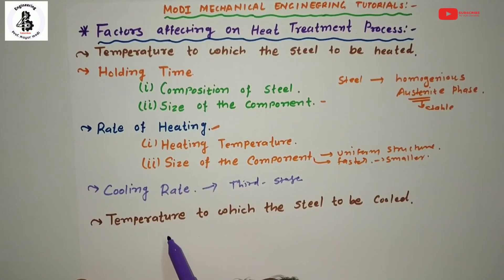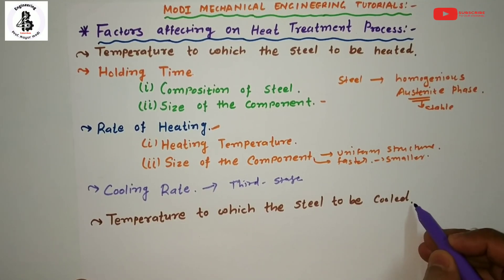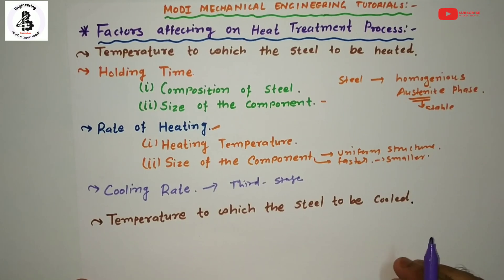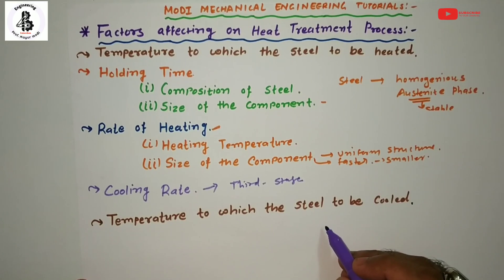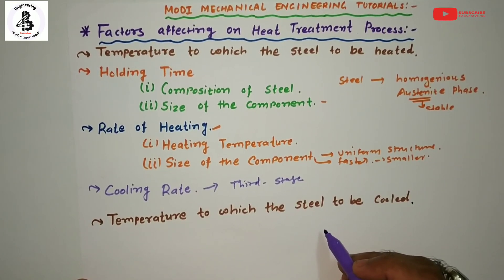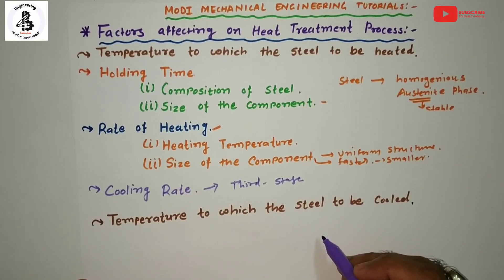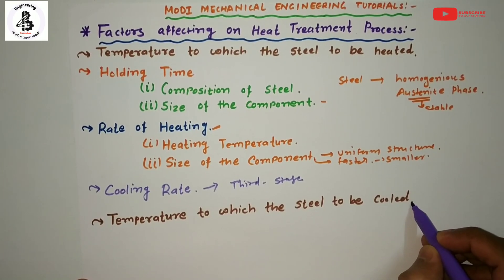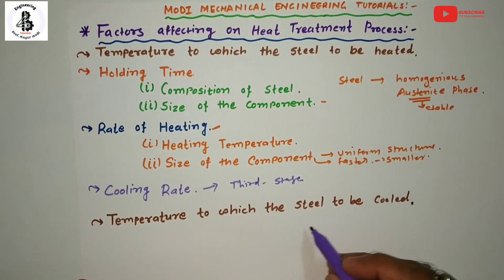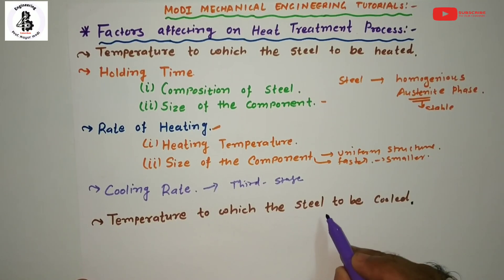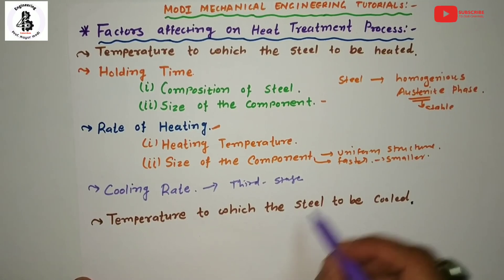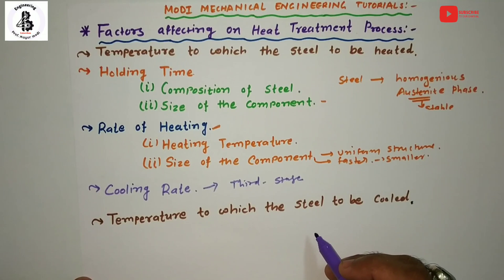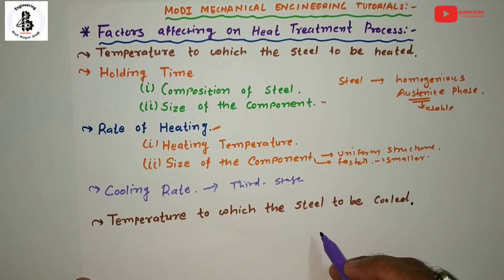The last factor is the temperature to which the steel is to be cooled. This is again decided by the purpose of the heat treatment process and hence the final microstructure. Accordingly we will be able to find the temperature to which the steel is to be cooled. This basically depends upon the requirements of the properties at room temperature so that it performs well in the applications.